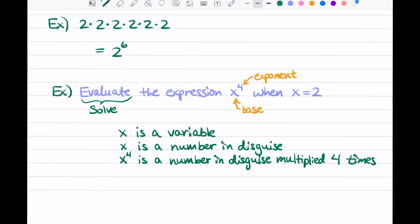OK. x to the fourth is a number in disguise multiplied four times. Well, is it really in disguise? Looks like in the problem it tells us x equals 2. We know what's behind the mask. So this number in disguise is just 2. So now we know x to the fourth power is 2 multiplied four times.